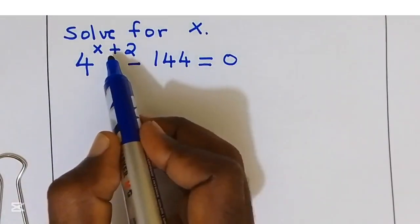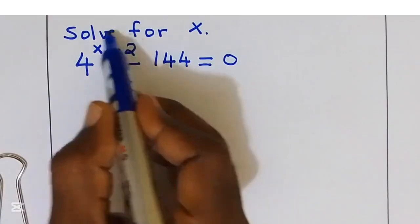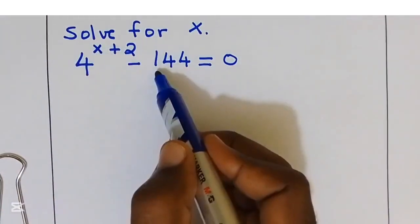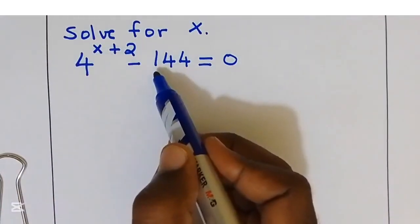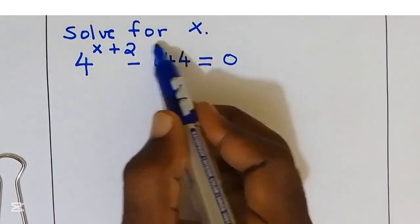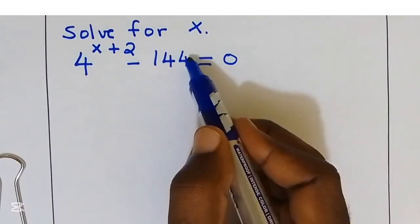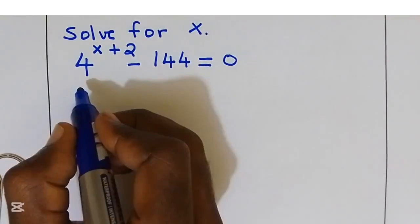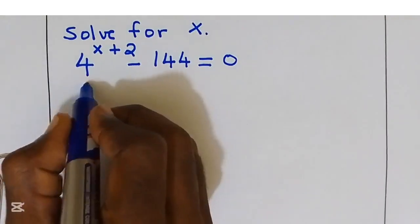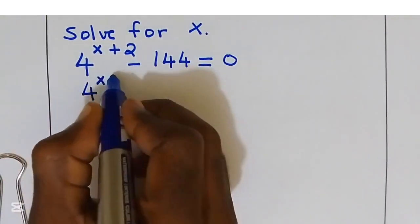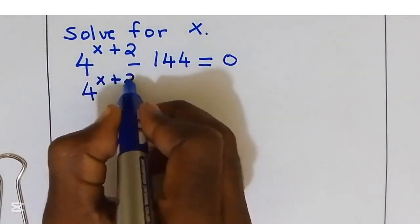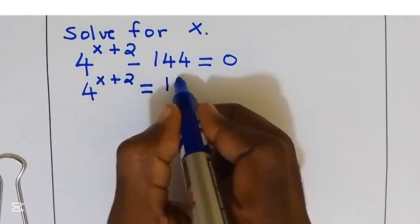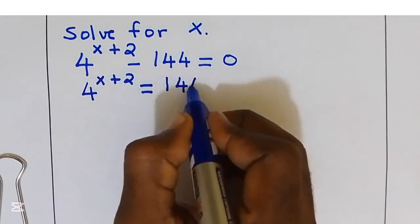First, we are going to separate the term that involves x from the constant, by taking 144 to the right side. So 4 to the power of x plus 2 is equal to 144.